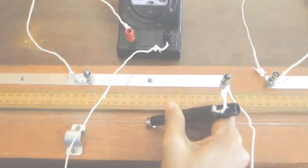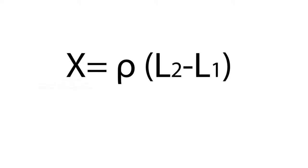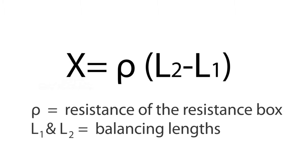Apply ρ, L1, and L2 of the current circuit in the equation and find out the resistance of the unknown. This is the resistance in room temperature. Change the temperature and repeat the steps to find out the resistance in the changed temperature.